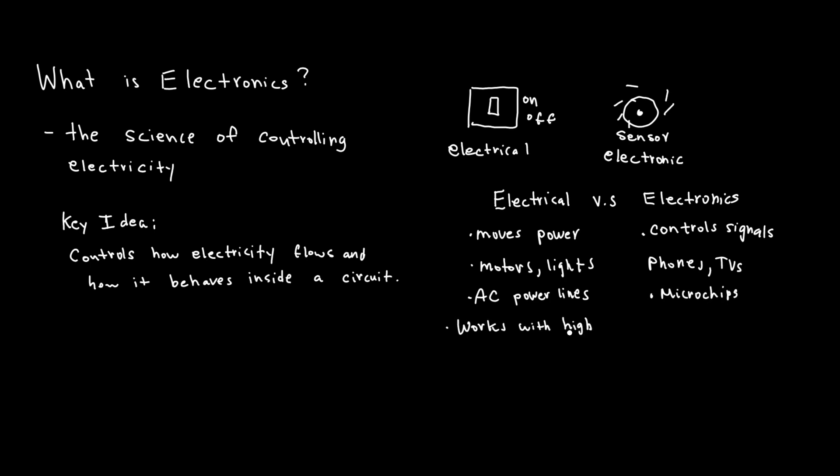Electrical uses AC power lines, electronics uses microchips. Electrical works with high voltage while electronic often uses small voltages. Electrical systems deal with generating and transporting electricity, like what comes out of your wall socket.